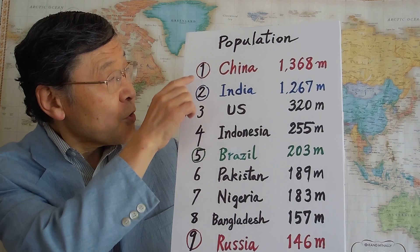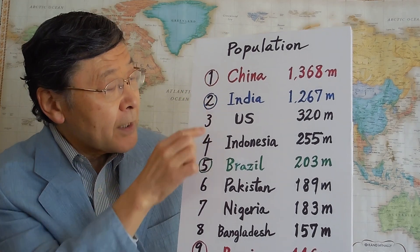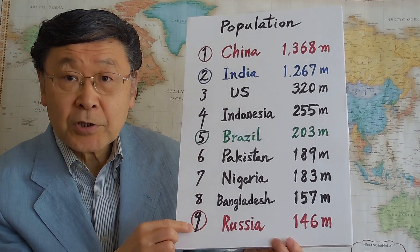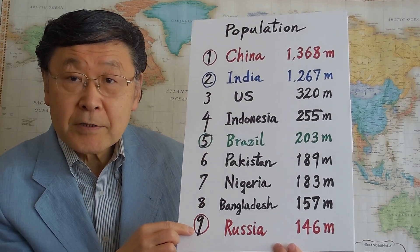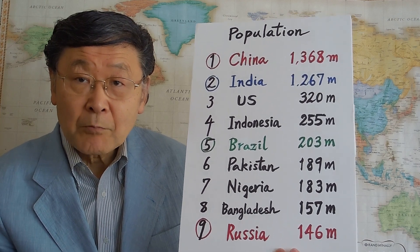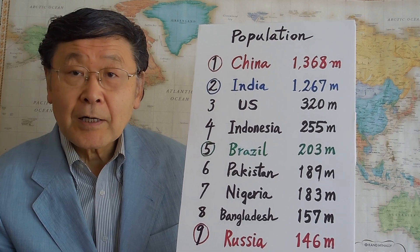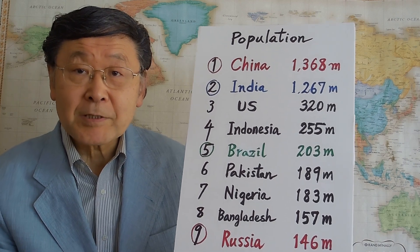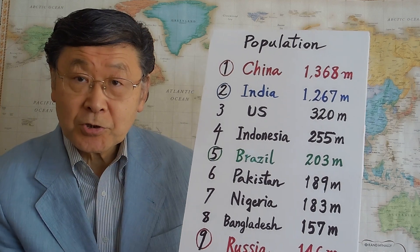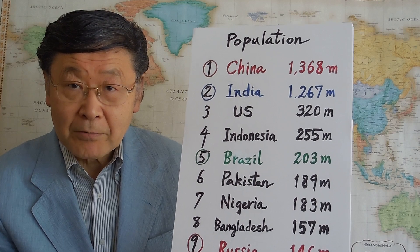These four countries — China, India, Brazil, and Russia — comprise the so-called BRIC nations, with a kind of global presence, partly because of this large population, large land area and resources.